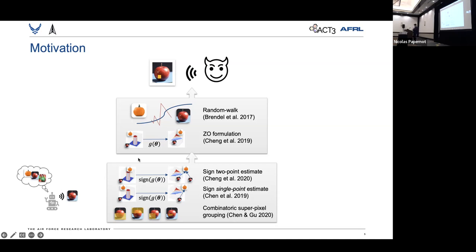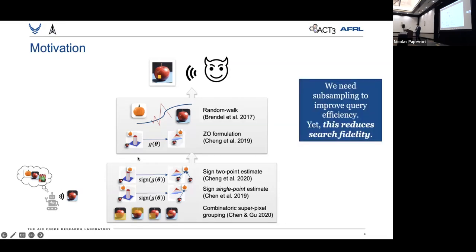So this formed the impetus for our paper. Basically, we need to subsample the search space to achieve query efficiency. However, this reduces the search fidelity, so how is it possible that we can subsample the search space and still achieve a high-fidelity adversarial sample?